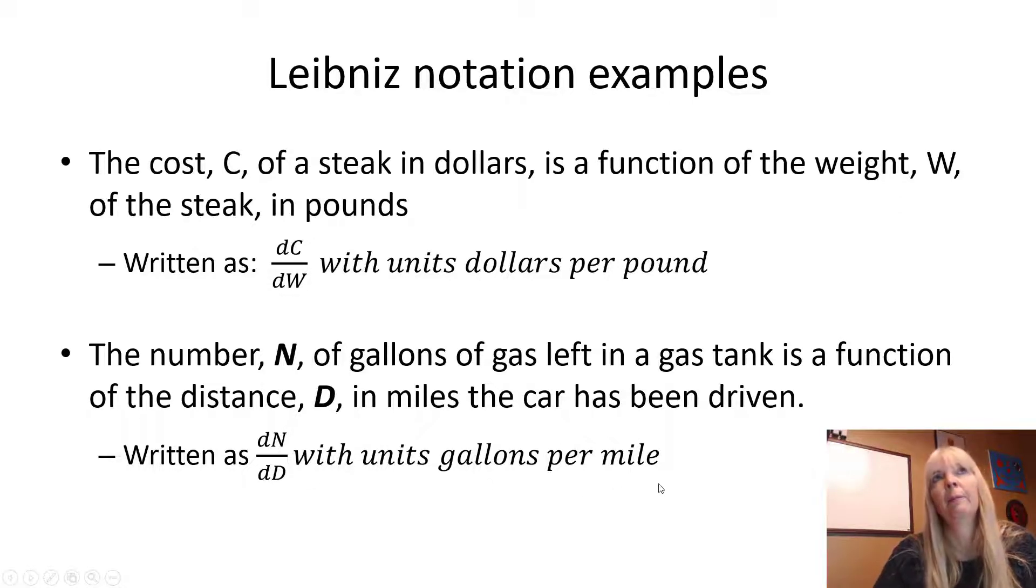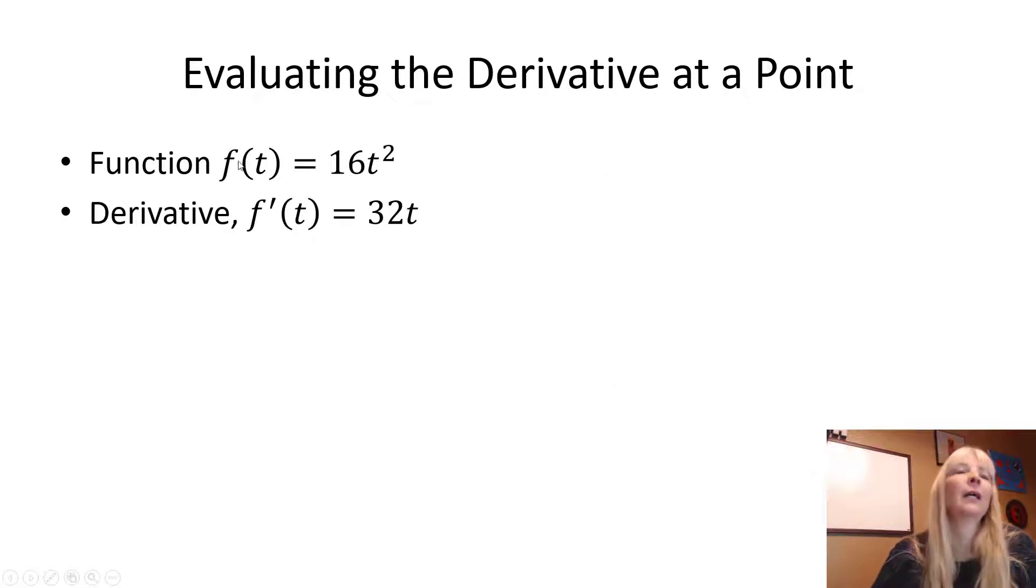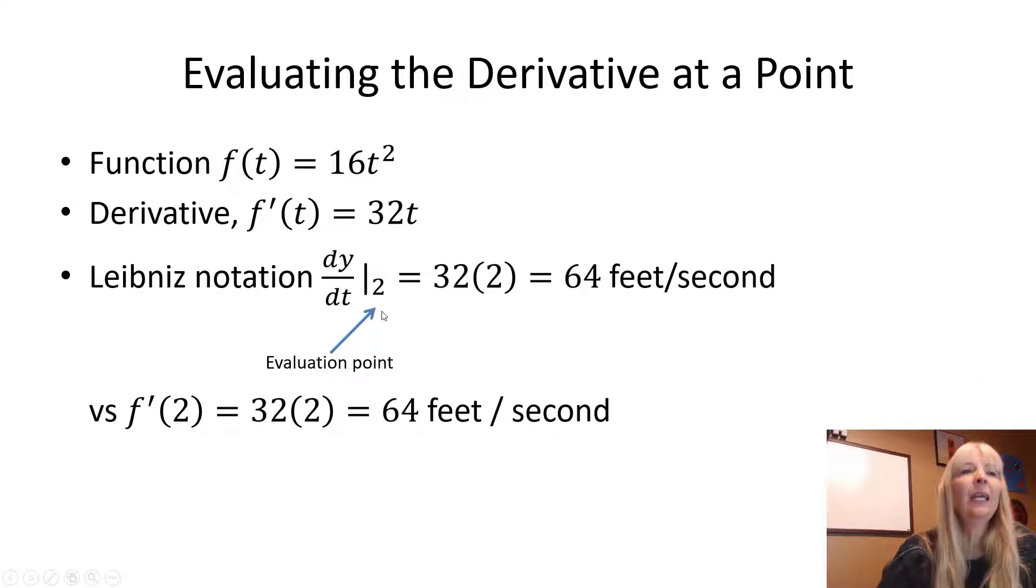We had the free fall example, the Galileo function 16t squared. We came up with the derivative. I could write this in Leibniz notation and even state how I evaluated it. They tend to put this straight line - that's an evaluation line - and then the number after it's the point you plug in. So this would say evaluate the derivative, which I know is 32t, for t equals 2, which is the same thing down here. It's just a different way of writing it. I tend to use this way a lot, but I think most of y'all tend to like this way because you're used to evaluating functions by plugging in what's in parentheses. Either way means the same thing.